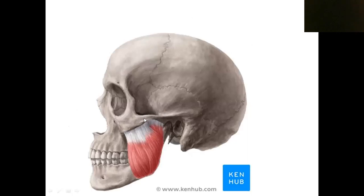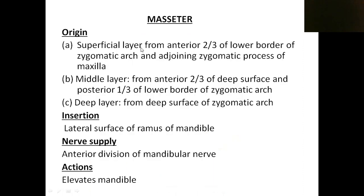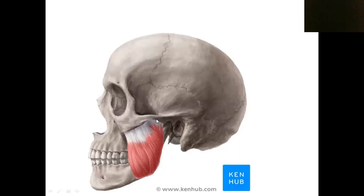The zygomatic arch has an outer surface and an inner surface, an upper border and a lower border. The superficial head arises from the anterior two-thirds of the lower border of the zygomatic arch. The deep head arises from the posterior one-third of the lower border of the zygomatic arch and from the inner surface of that region.